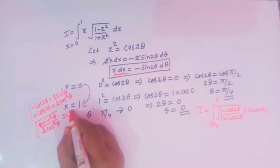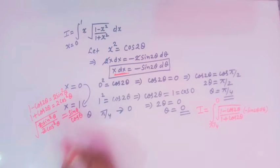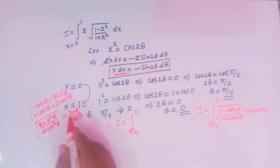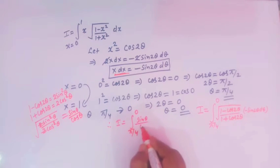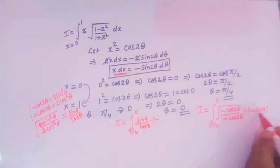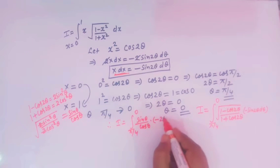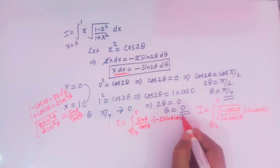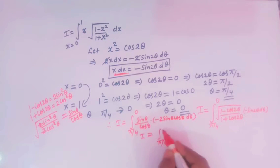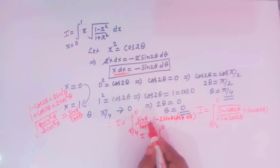The 2s cancel, so we are left with sin θ over cos θ. Therefore the integral I can be written as integral from π/4 to 0 of (sin θ / cos θ) times minus sin 2θ dθ. For sin 2θ we write 2 sin θ cos θ, so I becomes integral from π/4 to 0 of (sin θ / cos θ) times minus 2 sin θ cos θ dθ. The cos θ terms cancel.